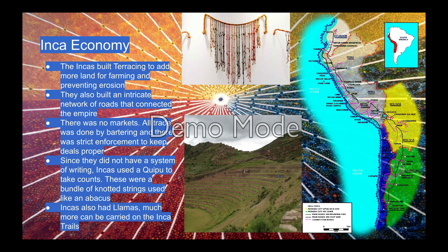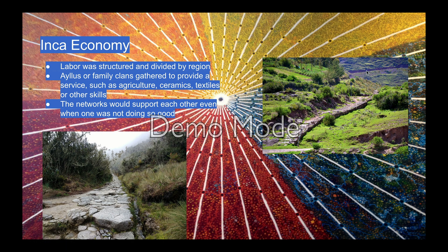The Inca economy: Incas built terracing to add more land for farming and prevent erosion, and built an intricate network of roads connecting the empire. There were no markets — all trade was done by bartering with strict enforcement to keep deals fair. Since they didn't have a writing system, Incas used a quipu — bundles of knotted strings used like an abacus — to keep counts. Incas also had llamas, which could carry goods along the Inca trails and also provided meat. As you can see, the Inca trail system throughout Peru still exists today, and you can hike from Cusco to Machu Picchu.